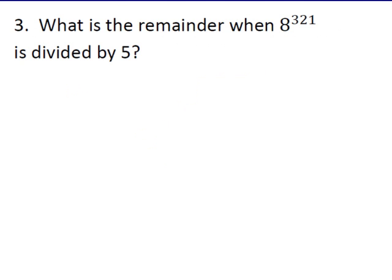All right, last problem. What is the remainder when 8 to the 321st is divided by 5? Well, remember what you do on this is you look for a pattern. So we just start with 8. 8 divided by 5 is going to give you, is equivalent to 3 mod 5. Multiply by 8 again, that's going to give you 64 divided by 5, which is equivalent to 24 mod 5, because I multiply the 3 by 8, which is equivalent to 4 mod 5.